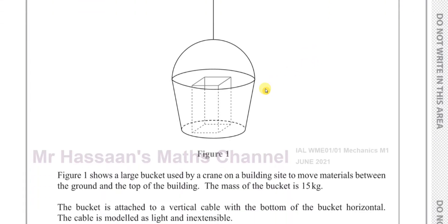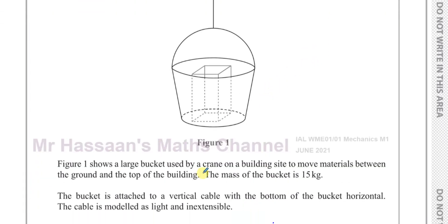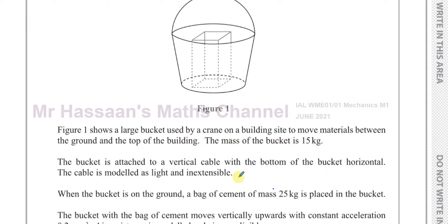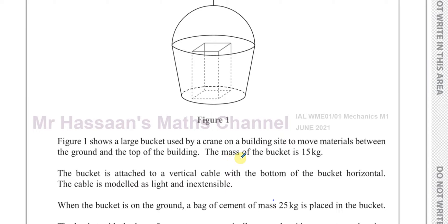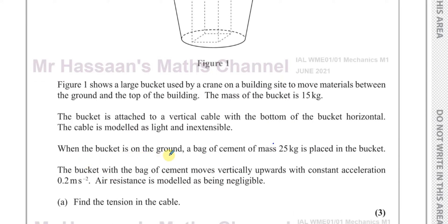This question is about a bucket used by a crane on a building site to move materials between the ground and the top of a building. The mass of the bucket is 15 kilograms, attached to a vertical cable. The cable is modeled as light and inextensible. A bag of cement of mass 25 kilograms is placed inside the bucket, and the bucket with the bag moves vertically upwards with a constant acceleration of 0.2 meters per second squared. Air resistance is modeled as negligible.